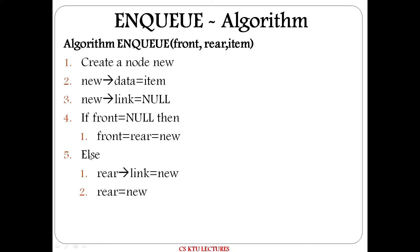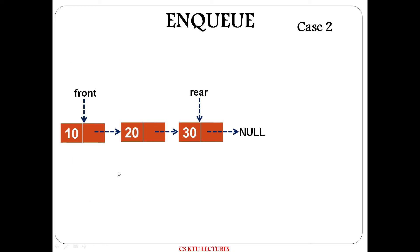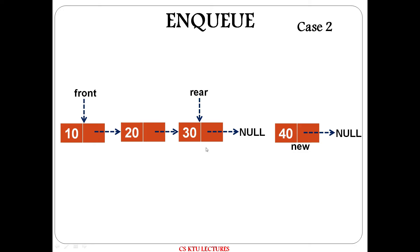This is Case 2. Assume there are 3 elements: 10, 20, 30. Front points to 10 and rear points to 30. A new item is to be inserted. A new node is created, data is placed, and link is set to null. This is the last node. The new node is set as the next of the current rear node, and rear is updated to point to the new node.